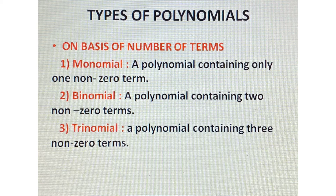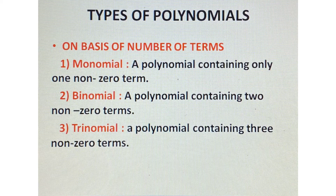Polynomials are categorized on two bases: first, on the basis of number of terms; and second, on the basis of degree. On the basis of number of terms: a monomial is a polynomial containing only one non-zero term; a binomial is a polynomial containing two non-zero terms; and a trinomial is a polynomial containing three non-zero terms.